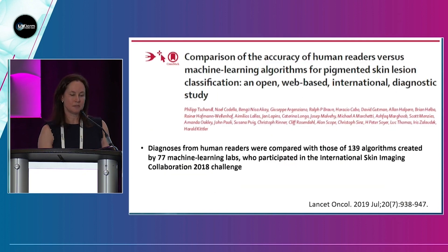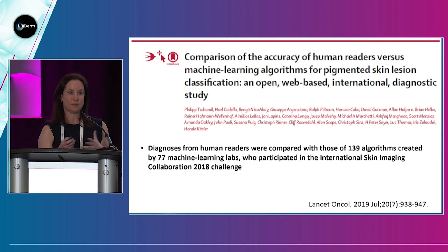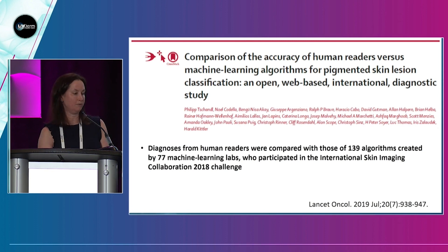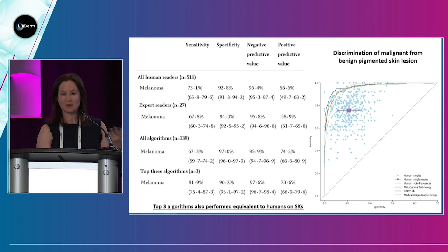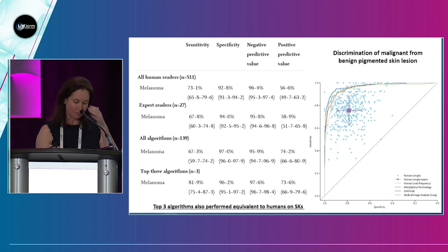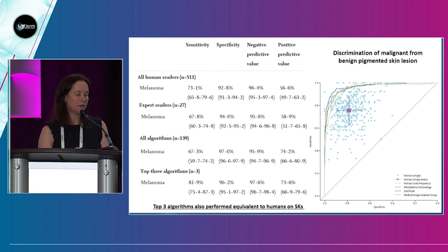The ISIC Challenge from 2019 invited several groups of investigators to develop an algorithm and test it on a new set of lesions, comparing it to the performance of dermatologists. Looking at the top three algorithms versus expert human readers, most of the top algorithms really did outperform dermatologists and even expert dermatologists. This is interesting proof of concept that we can match dermatologist-level accuracy with computers using generally dermatoscopic images.